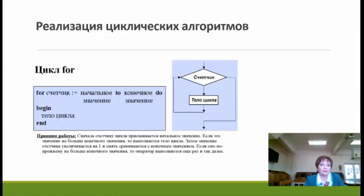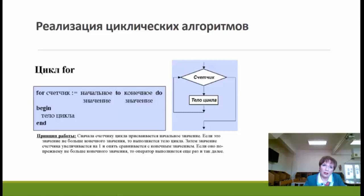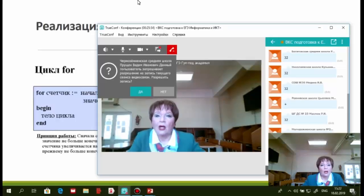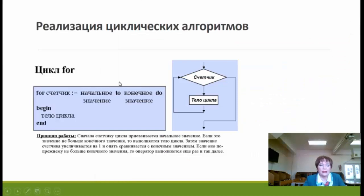Первый цикл — цикл с параметром, цикл FOR. В цикле FOR есть счётчик, который изменяется от начального значения к конечному с шагом единица. Изменить шаг в Pascal нельзя, хотя можно идти от большего значения к меньшему — тогда вместо ключевого слова TO пишется DOWNTO. Цикл FOR используют тогда, когда точно известно количество итераций.